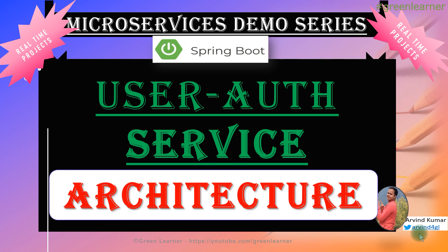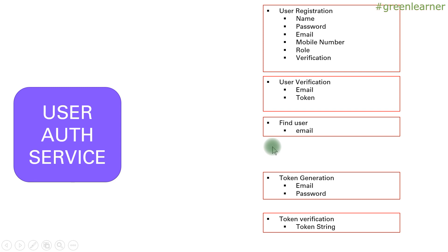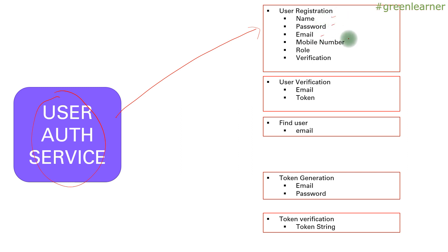So let's go ahead and see this. This is the user auth service, and there are a couple of endpoints I am going to create. The first one is user registration, which is going to contain name, password, email, mobile number, and role. Verification means what admin user, general user, or any other user — we are going to create a verification endpoint as well. The second endpoint is going to be user verification.